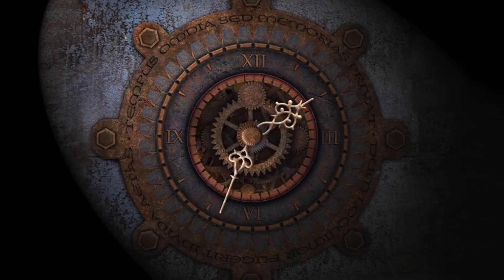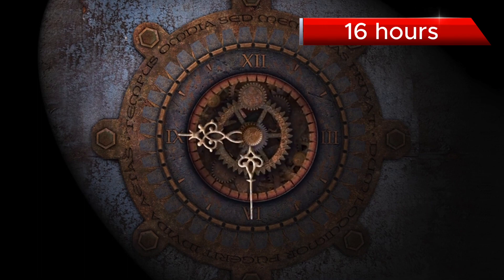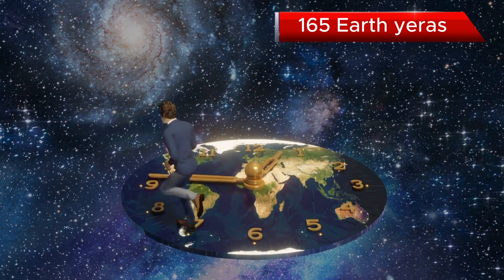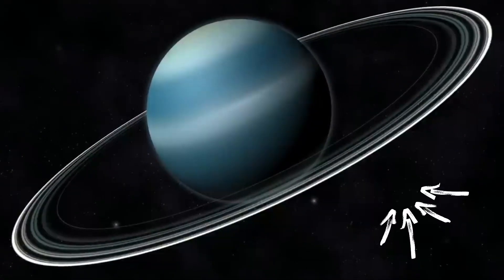Neptune has an incredibly short day, spinning on its axis in just 16 hours. And it takes 165 Earth years to complete an orbit around the sun.